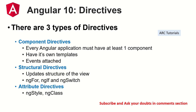There are namely three types of directives: component directive, structural directive, and attribute directive. These are the three built-in directive types. There is also a thing called custom directives, where we can create our own directives, but at a high level, there are three types.